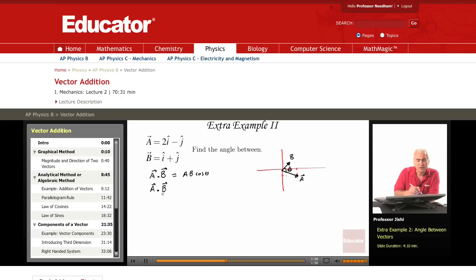Another way is to write it in terms of the components. A dot B is Ax Bx plus Ay By. So since A dot B is the same, this means that cosine theta is Ax Bx plus Ay By over A B.